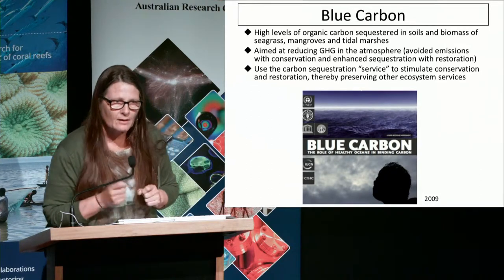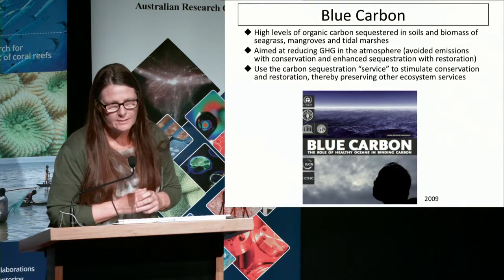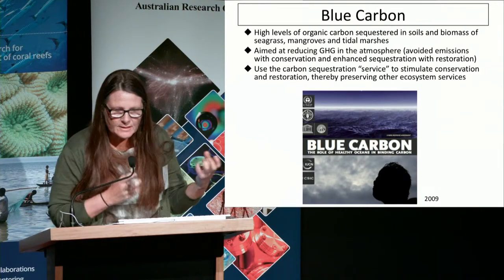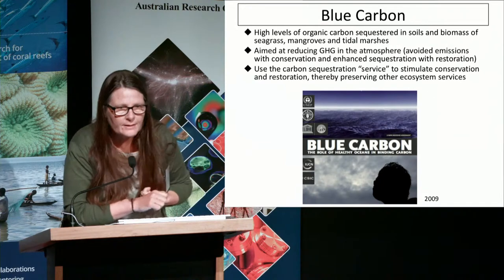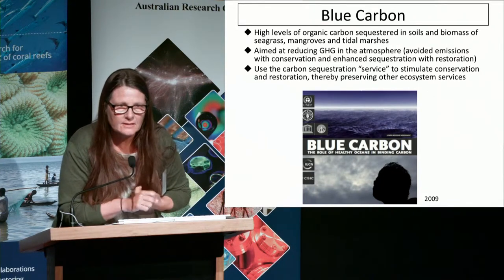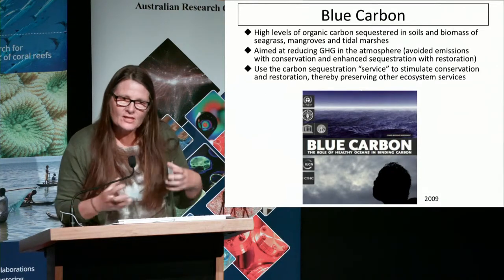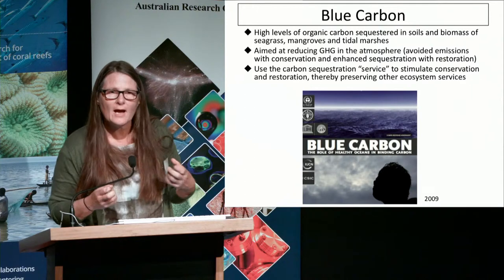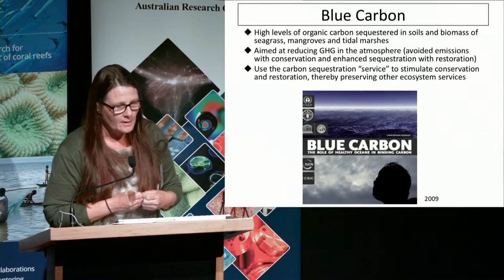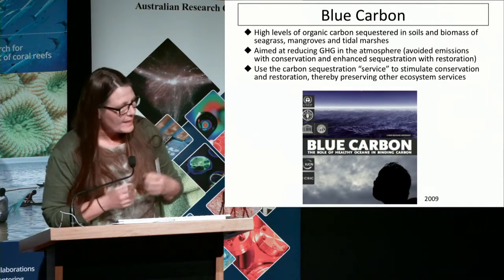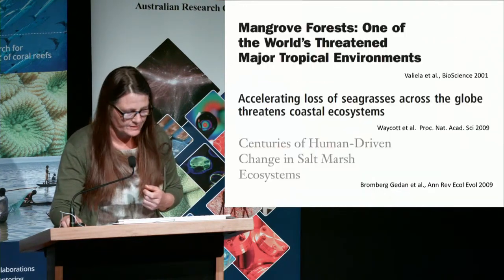Blue carbon also outlines a range of strategies for conservation and restoration of coastal wetlands. It's aimed at reducing greenhouse gas emissions by avoiding the destruction of these systems globally and also by restoring them. We're basically using this blue carbon service — the capacity to mitigate CO2 emissions — to stimulate conservation and restoration that conserves other ecosystem services.